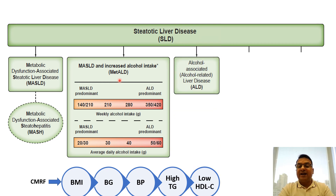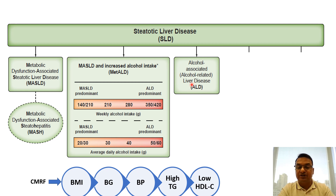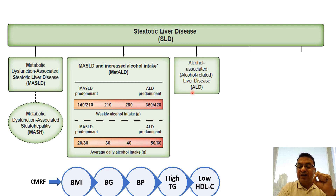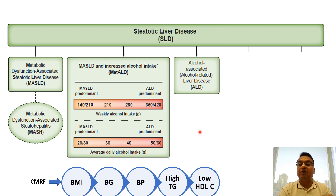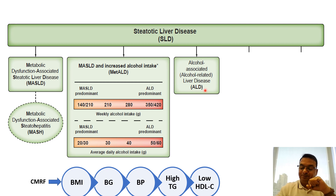The next category is defined as alcohol-associated steatotic liver disease, that is ALD. This is the category wherein the patient has a history of alcohol consumption of more than 50g per day for females and more than 60g per day for males. That is the ALD category.